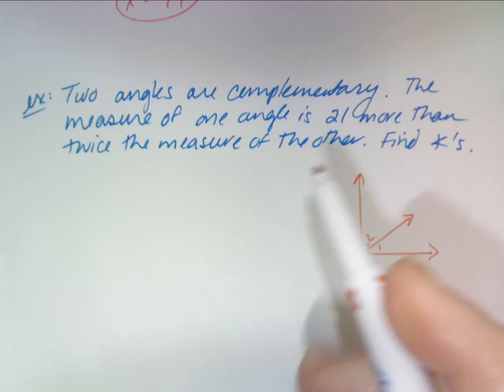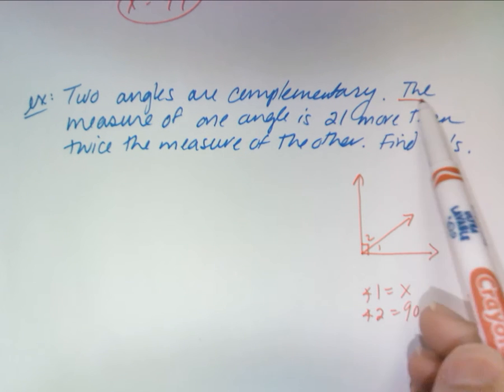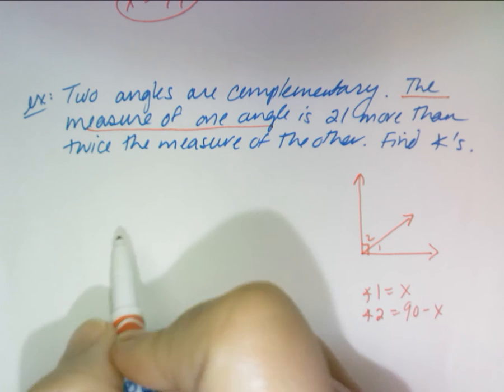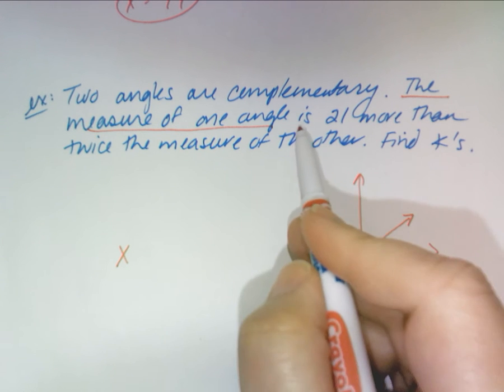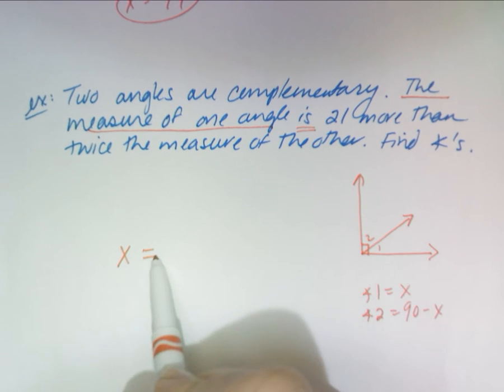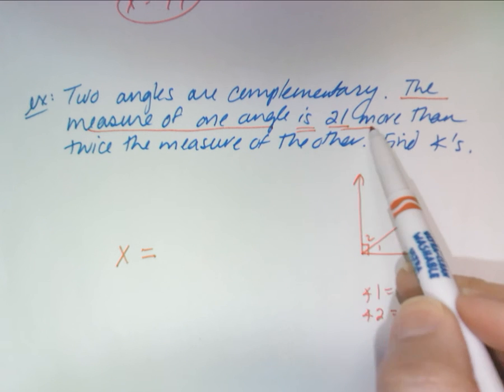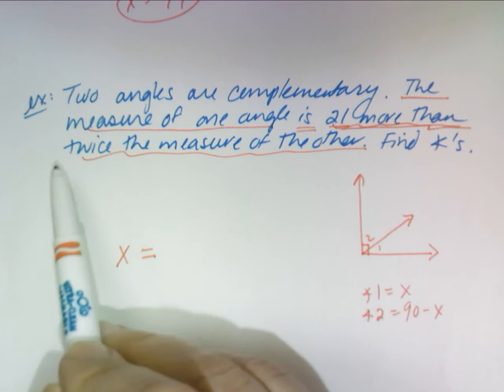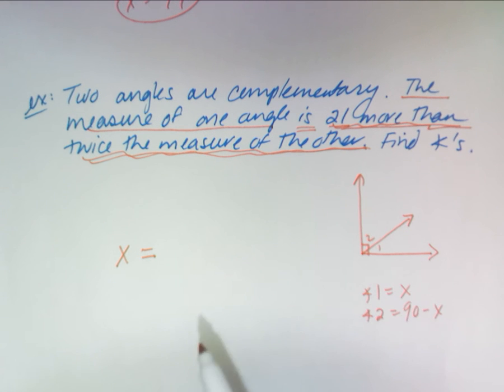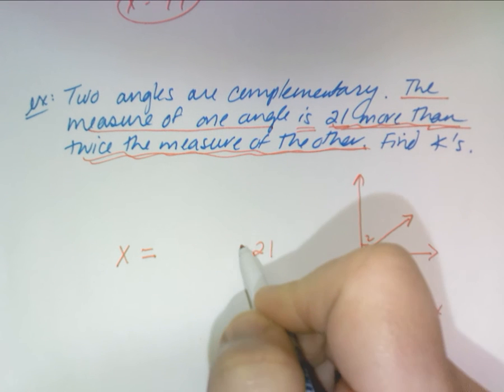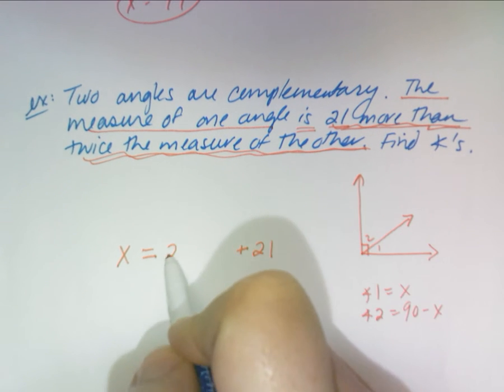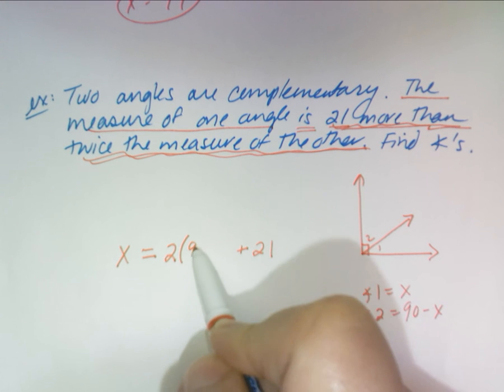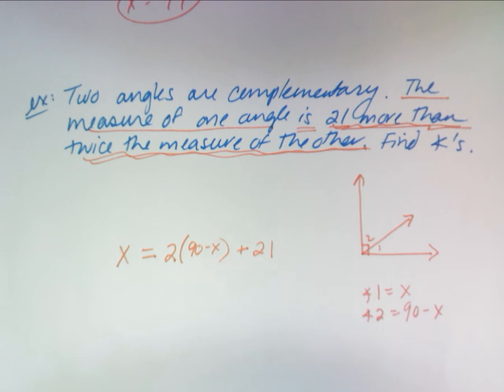So now we write an equation. The measure of one angle, so we'll say X, equals 21 more than twice the other. 21 more than twice the other guy, which was 90 minus X.